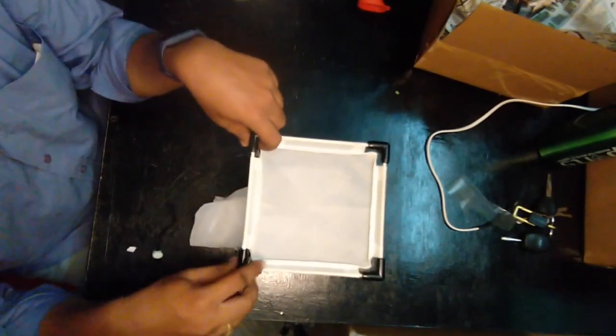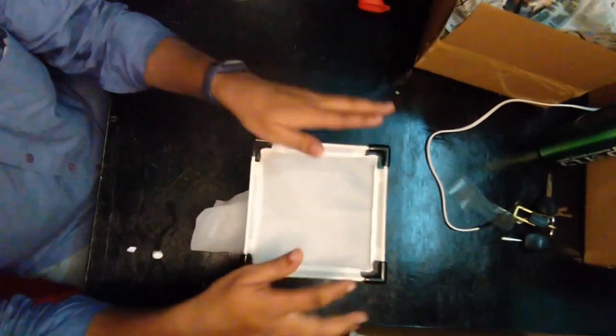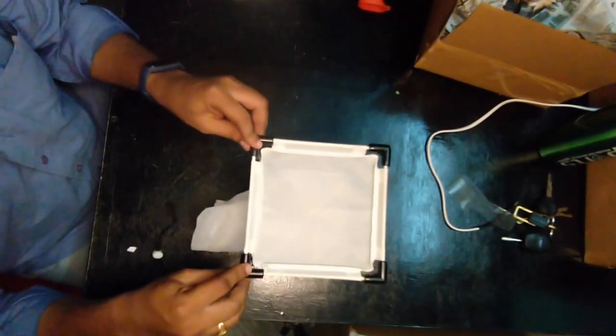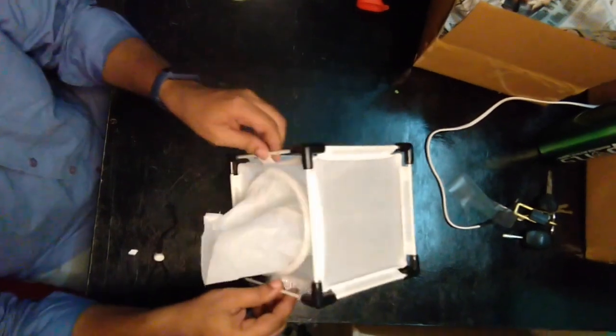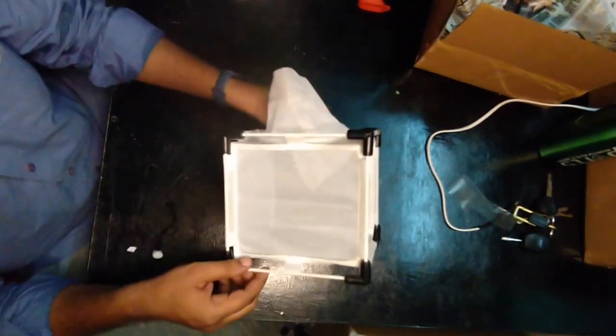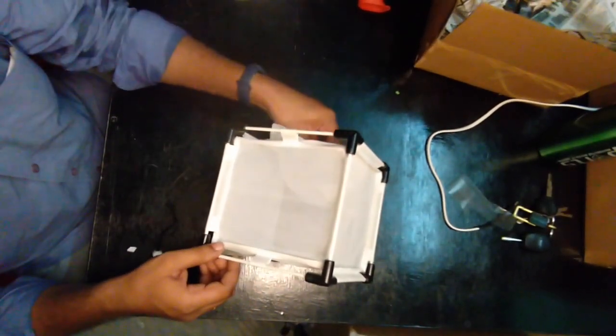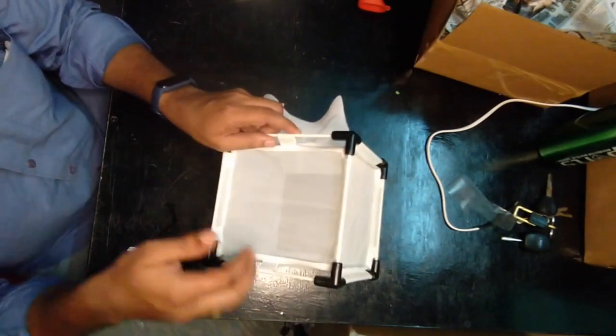Once you have installed the cage, the better way to check whether the cage is installed properly is by placing it onto a flat surface and then checking it.